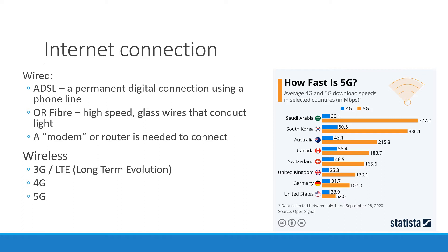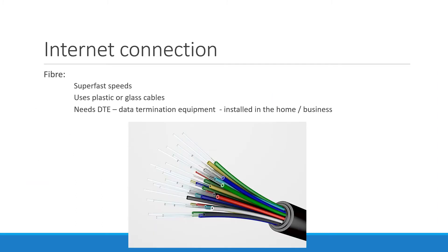On the wireless side, we have 3G, 4G, and now even 5G. Did you know that the fastest 5G is in Saudi Arabia, where they have speeds of 377.2 megabits per second? Your fiber looks like the pictures shown here — there are little glass or plastic tubes inside sheaths of plastic. It is really, really fast because you've got light traveling inside these cables. You need something called data termination equipment, which will be installed in your home or business when the company comes to install your fiber.